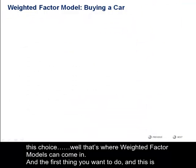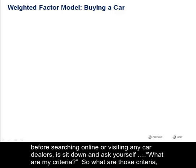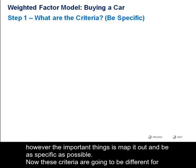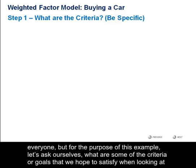And the first thing you want to do — and this is before searching online or visiting any car dealers — is sit down and ask yourself: what are my criteria? What are those criteria, those goals, those objectives that I am hoping to meet when making this decision? Now, this is sometimes easier said than done. However, the important thing is to map it out and be as specific as possible. Now, these criteria are going to be different for everyone, but for the purpose of this example, let's ask ourselves what are some of the criteria or goals that we hope to satisfy when looking at these options for cars?